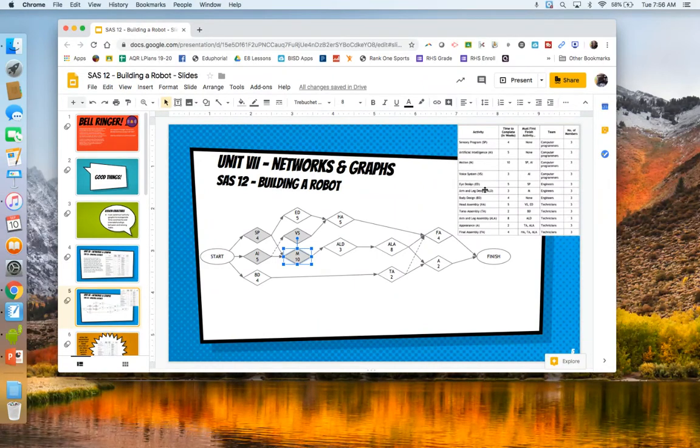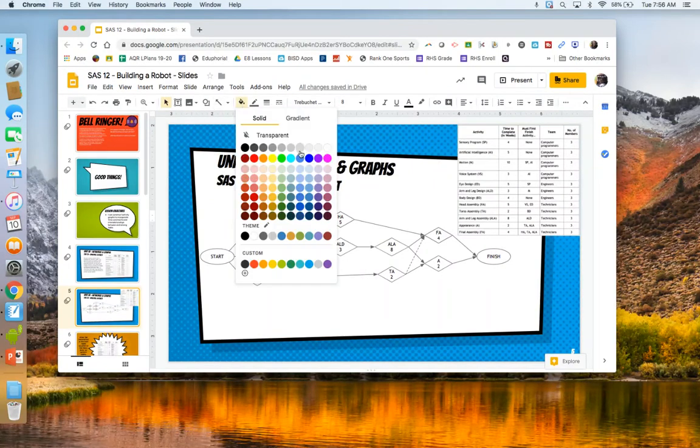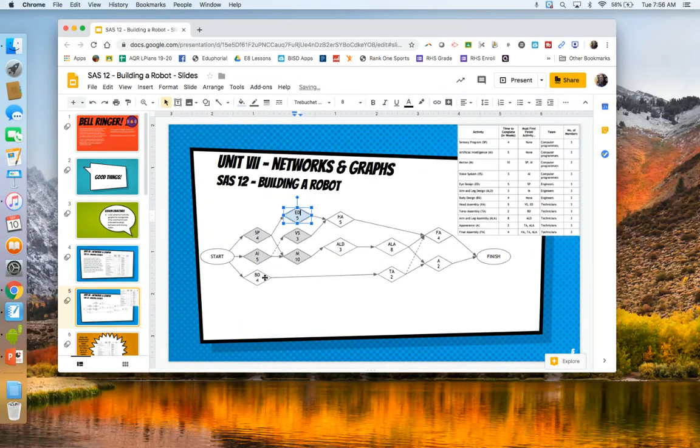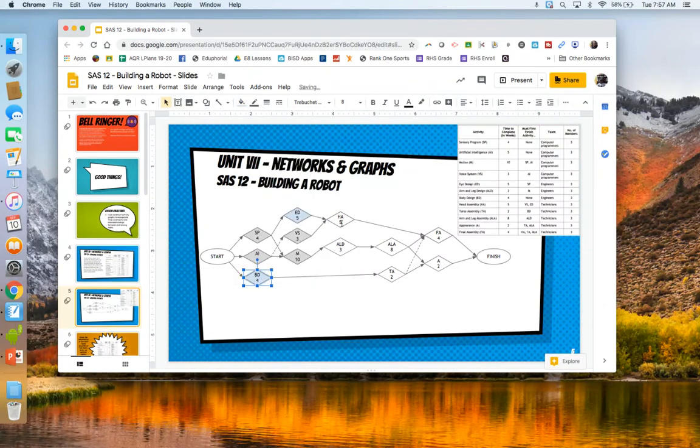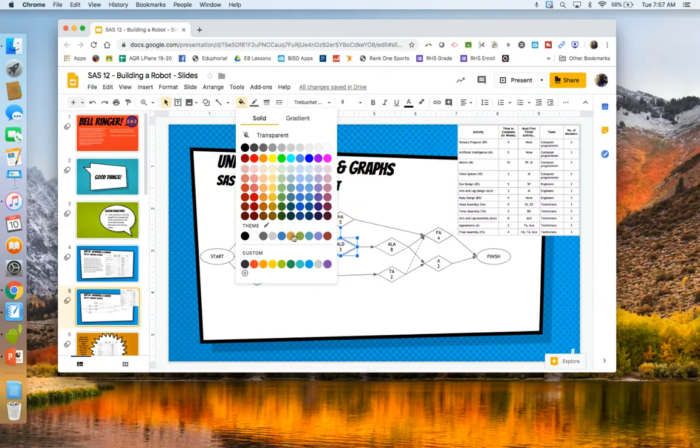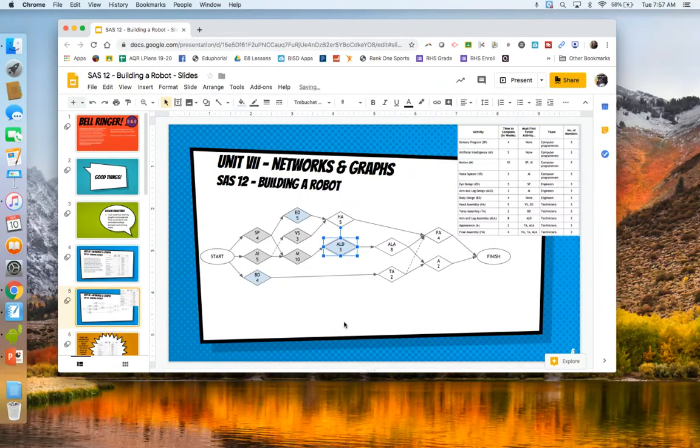How about engineers? There's only three tasks that are done by engineers. But let's color the engineers blue. Eye design is by engineers. We'll color it a very light blue. Okay? Body design, also by engineers. We'll color it very light blue. All right? And let's see. Arm and leg design engineering. So we'll change that to blue.